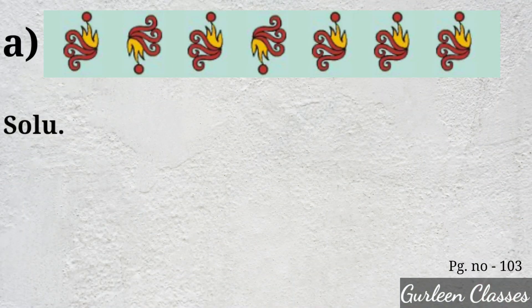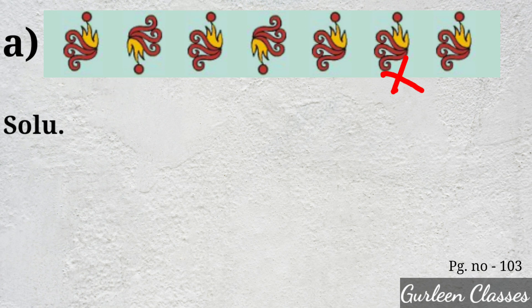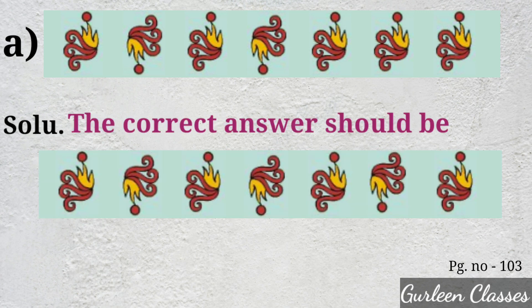Part A. Here you can see the pattern: up, down, up, down, up, up. So one picture is breaking the rule — it should be down. The correct answer should be down.